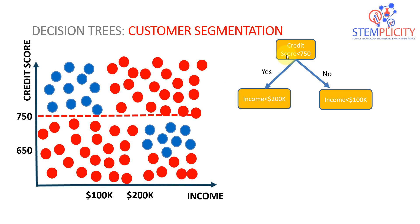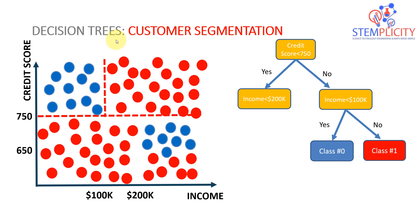If your credit score is less than 750 you belong to this region; if more than 750 you belong to this other region. So first split: credit score less than 750 — yes here, no there. If credit score is more than 750, you're in good shape. Then the next question: is your income less than 100,000? If yes, you are classified as class zero — the blue class.